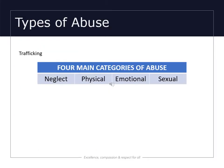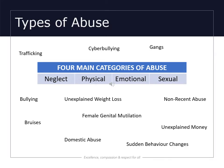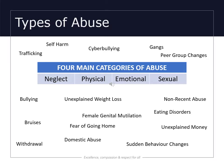The four main categories of abuse are neglect, physical abuse, emotional abuse, and sexual abuse. On the screen now you will see some of the potential presenting factors that a child may have which could indicate that they are suffering from some kind of harm.